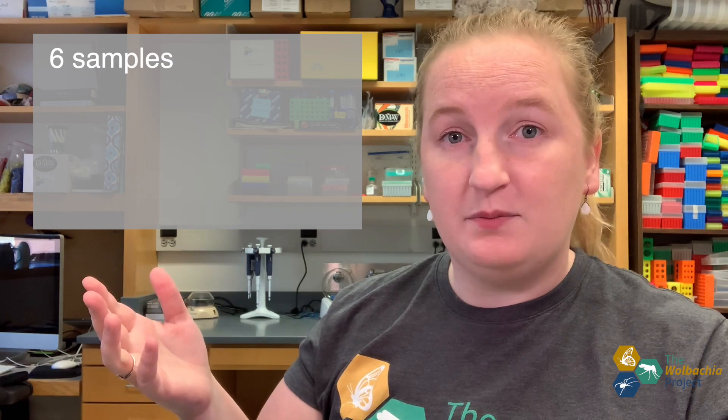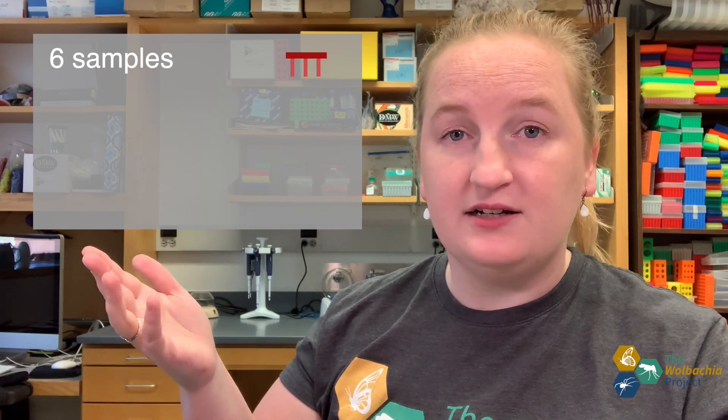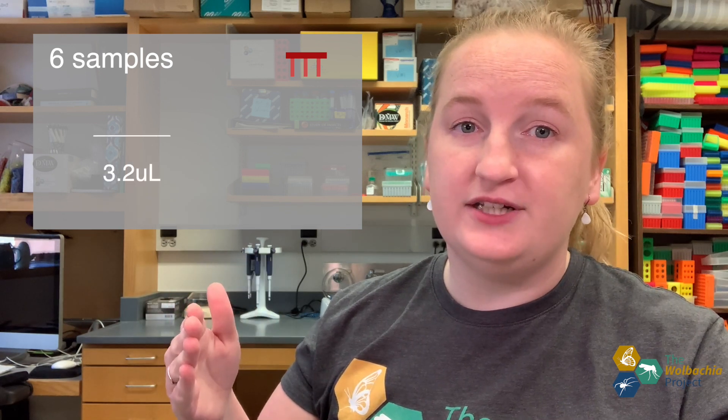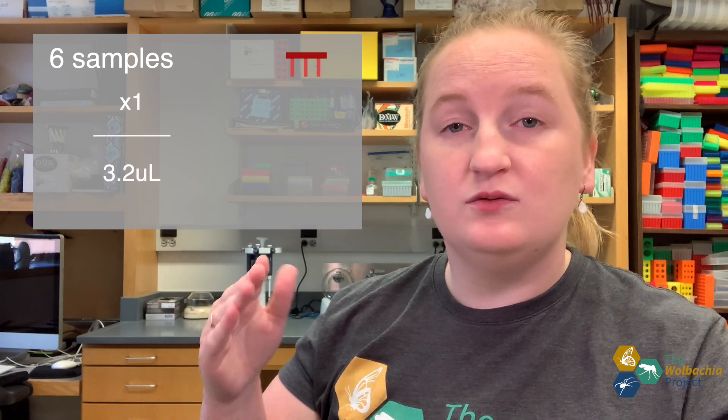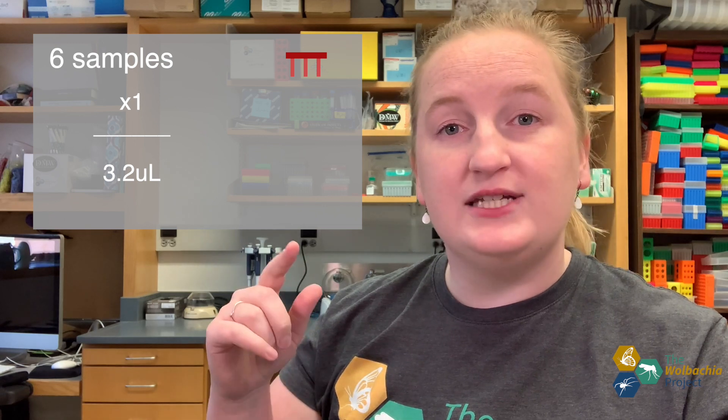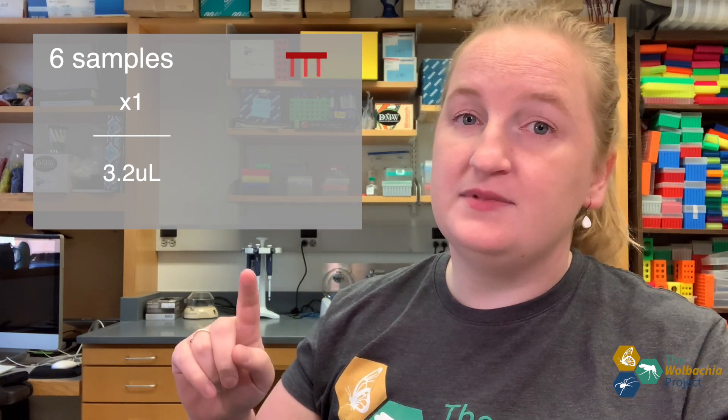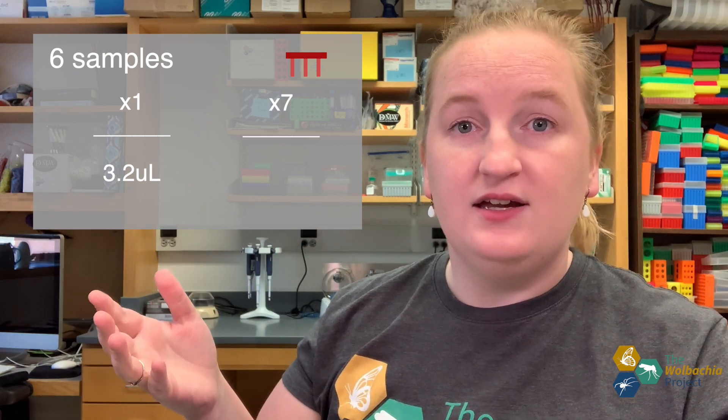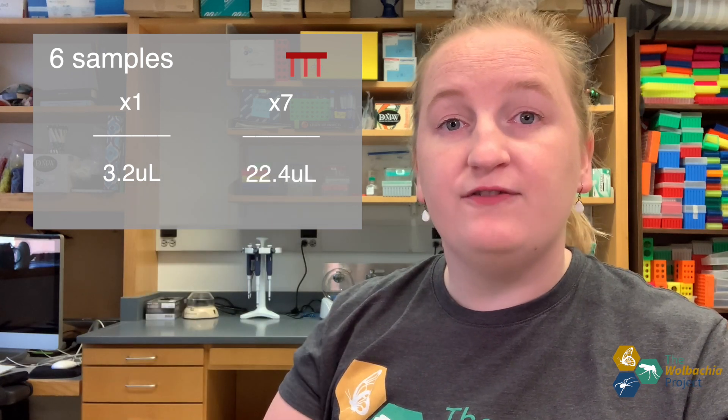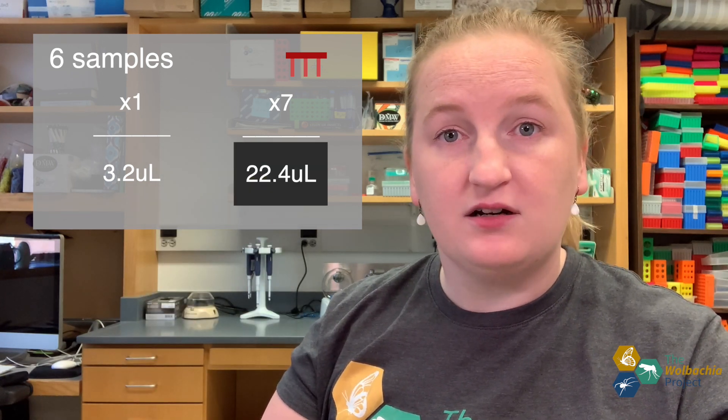To calculate how much goes into this PCR cocktail, we want to take the number of the samples that we have plus one. That accounts for pipetting error. So, for example, if I had six samples, and I was going to add forward primer to my PCR cocktail, and I knew that there were 3.2 microliters in an original just one reaction, I would take 3.2 times 6 plus 1 is 7, and I would add 22.4 microliters of forward primer into my PCR cocktail.